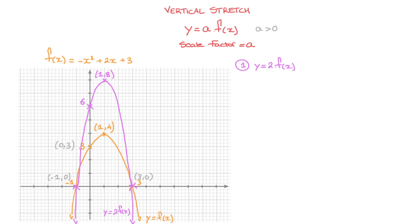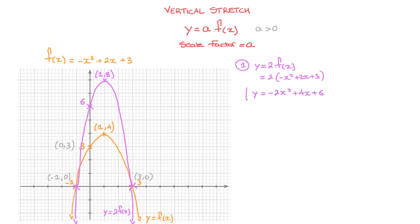Notice that the x-coordinates of all of the points on this curve have remained unchanged. The only thing that's changed in this vertical stretch are the y-coordinates, which have all been multiplied by two. If we're asked to find an expression for this new curve, all we have to do is multiply f of x by two. This new curve has an equation two times, in parentheses, negative x squared plus 2x plus 3. Distributing this two leads to y equals negative 2x squared plus 4x plus 6.